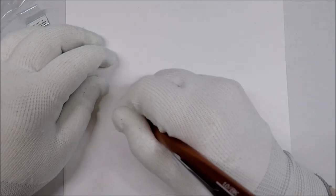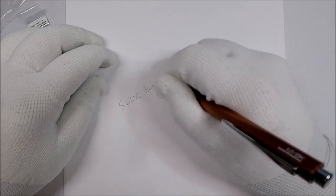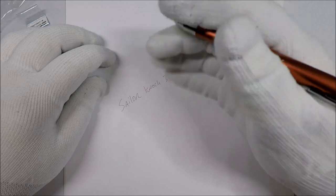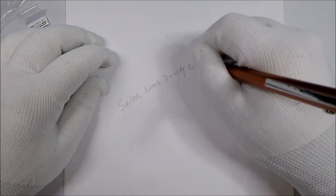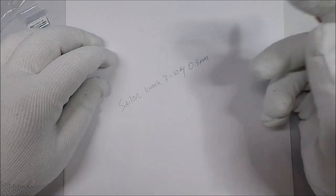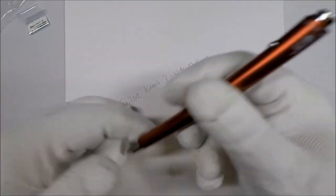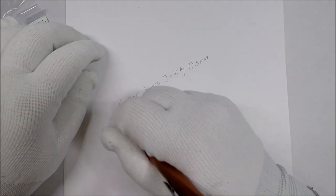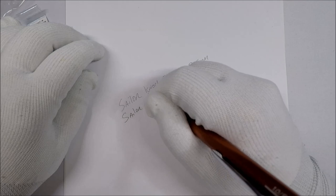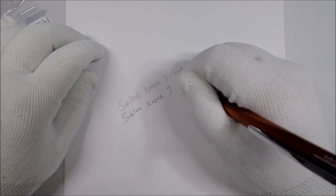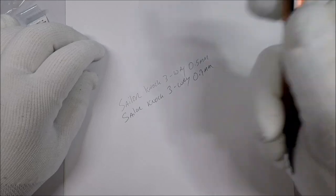So Sailor Knock three-way. And this one is the 0.5mm. So this is the thinnest one. And let's try the 0.7. Sailor Knock three-way. And this is the 0.7mm. I can see a little bit of a difference.